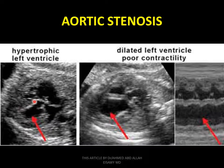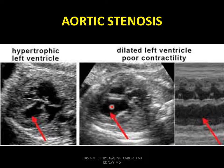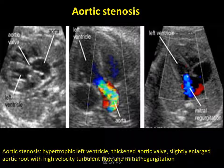We see thickened walls with hypertrophic left ventricle, or alternatively a dilated left ventricle with poor contractility. The condition may be hypertrophic or dilated — in the dilated form, there is increased lumen and increased measurement of the left ventricle chambers, as seen in M-mode with increased distance measurement of the left ventricle.